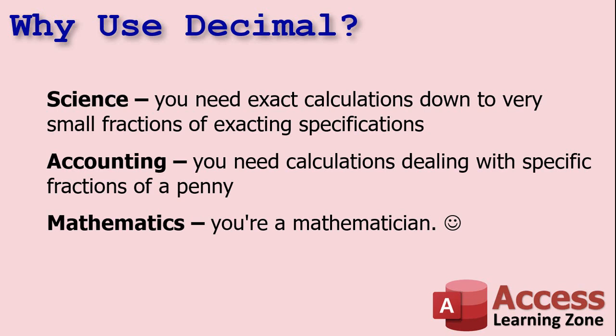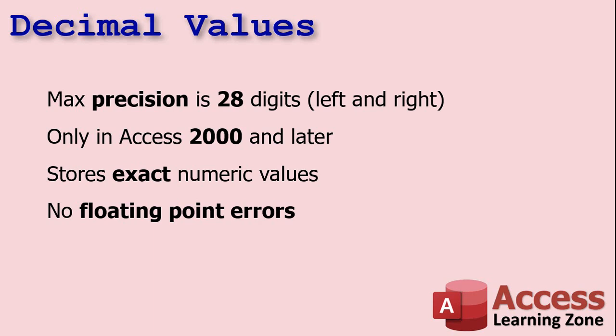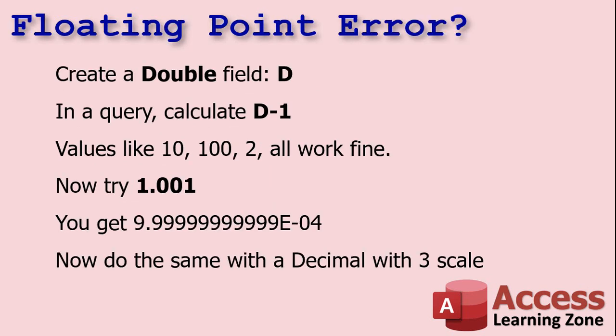Why would you want to use a decimal? Scientific applications requiring exact calculations down to very small fractions, accounting where you're dealing with specific fractions of a penny and you don't want any Office Space-style rounding errors, or if you're a mathematician who needs exact values. Mathematicians like things exacting even more than accountants. The max precision of a decimal value is 28 digits total left and right, and you specify the scale. These were introduced in Access 2000, and they store exact numeric values not susceptible to floating point errors.